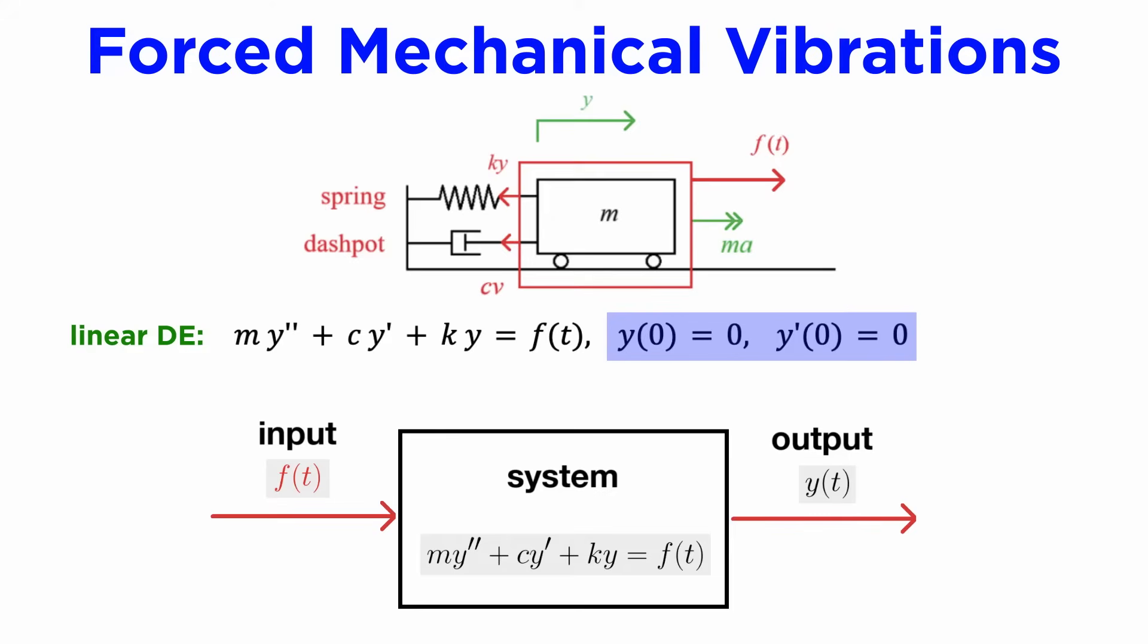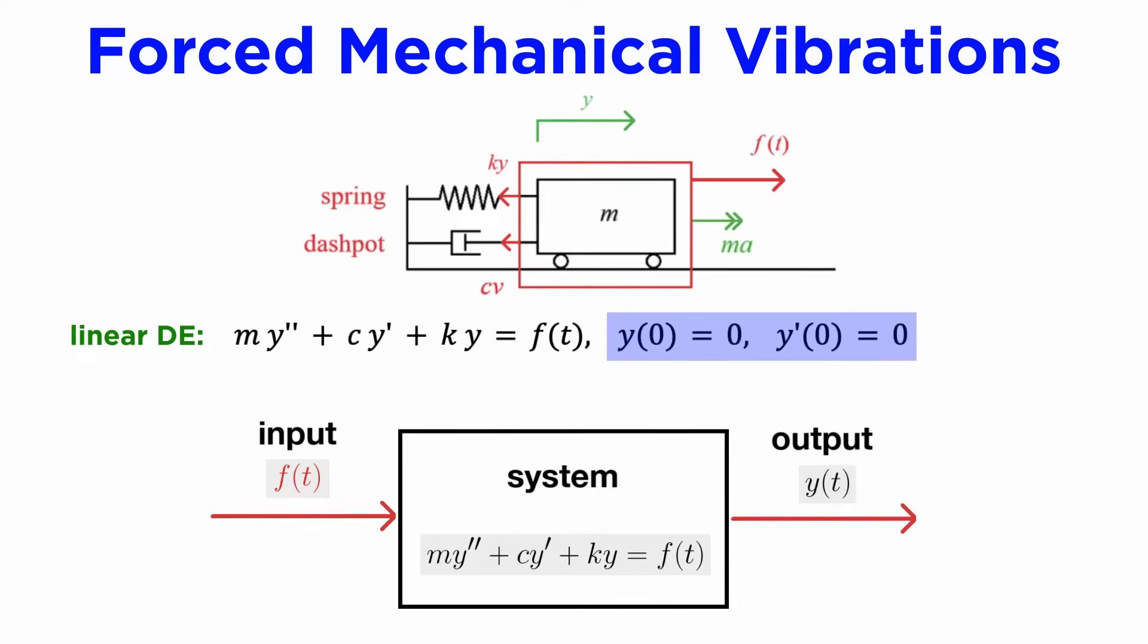If we assume that the system starts from rest, so that y and y'(0) are both zero, and we take Laplace transforms on both sides of this equation, we get the transformed solution capital Y(s) as a ratio of the Laplace transform of the input force, capital F(s), to a denominator term that is essentially the characteristic equation of our differential equation, just with s instead of lambda.